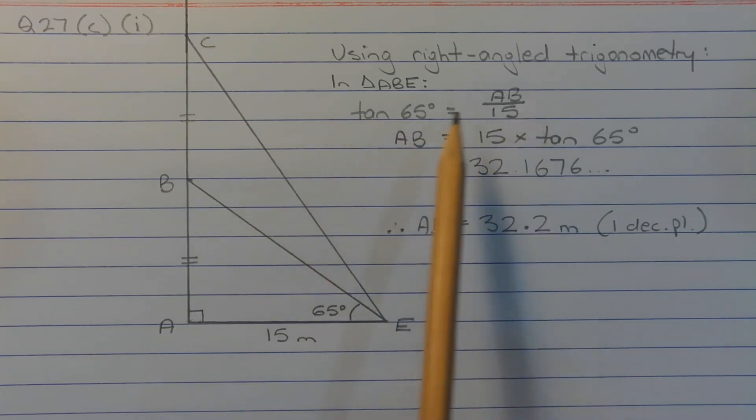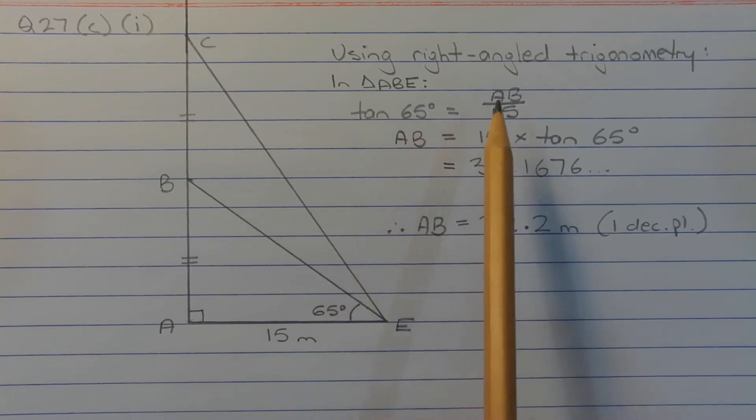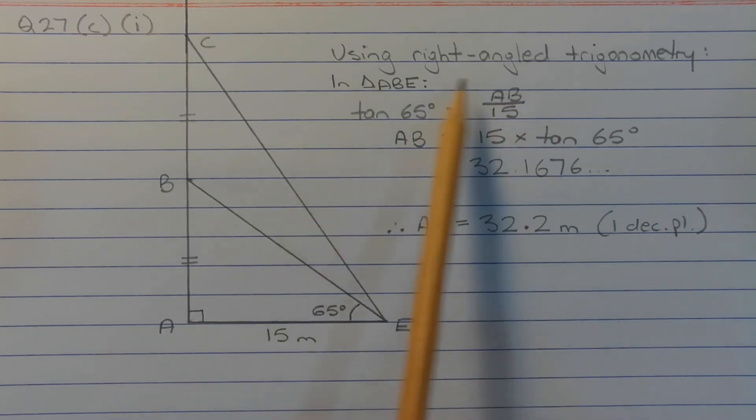So writing the equation involving tan, we have tan of 65 degrees is equal to the opposite side over the adjacent side, so that's AB over 15. Rearranging this equation to make AB the subject, we do that by multiplying tan 65 degrees by 15. So AB is equal to 15 times tan 65 degrees, which equals 32.1676 and so on.